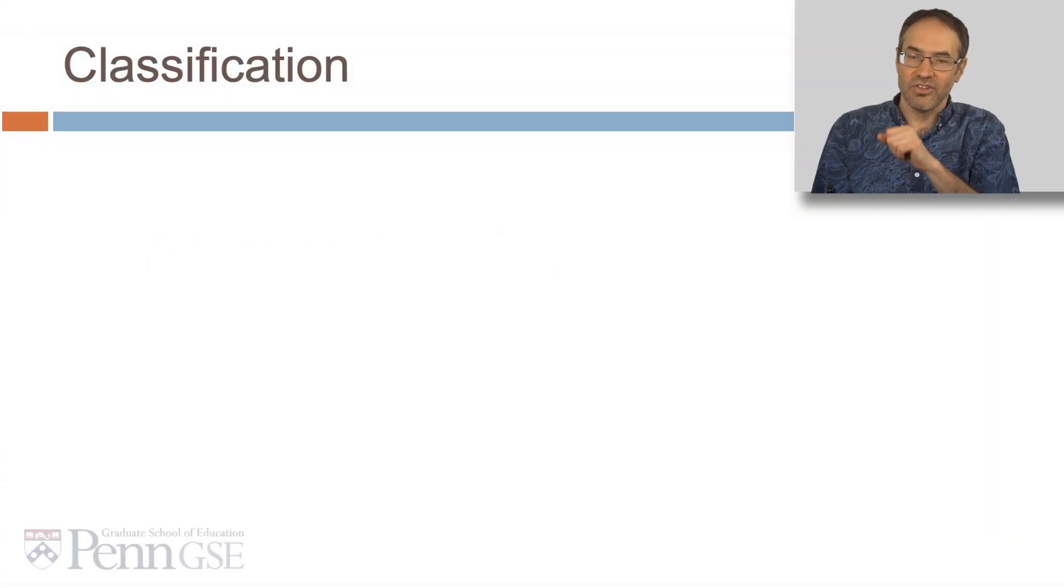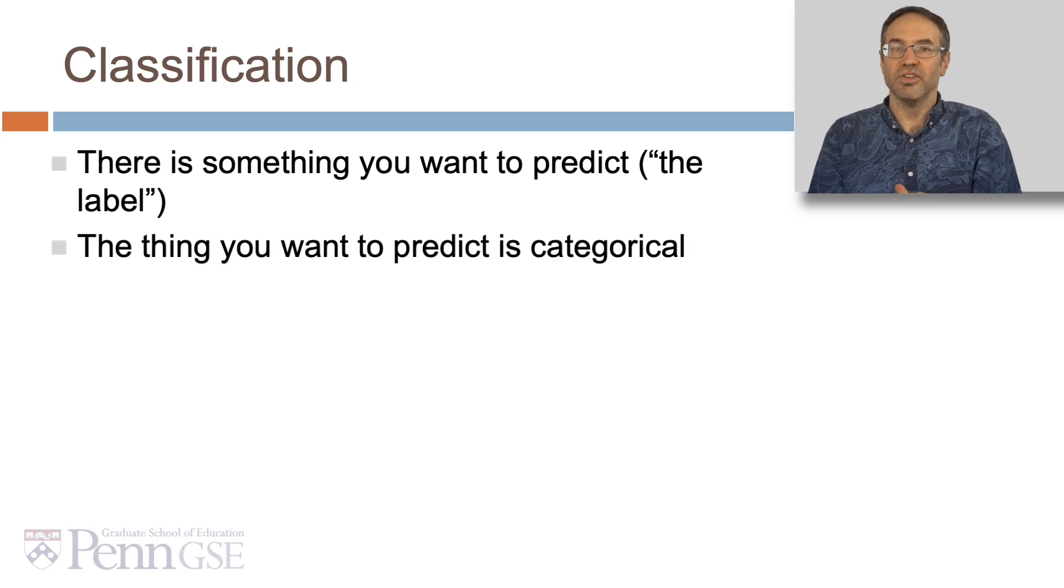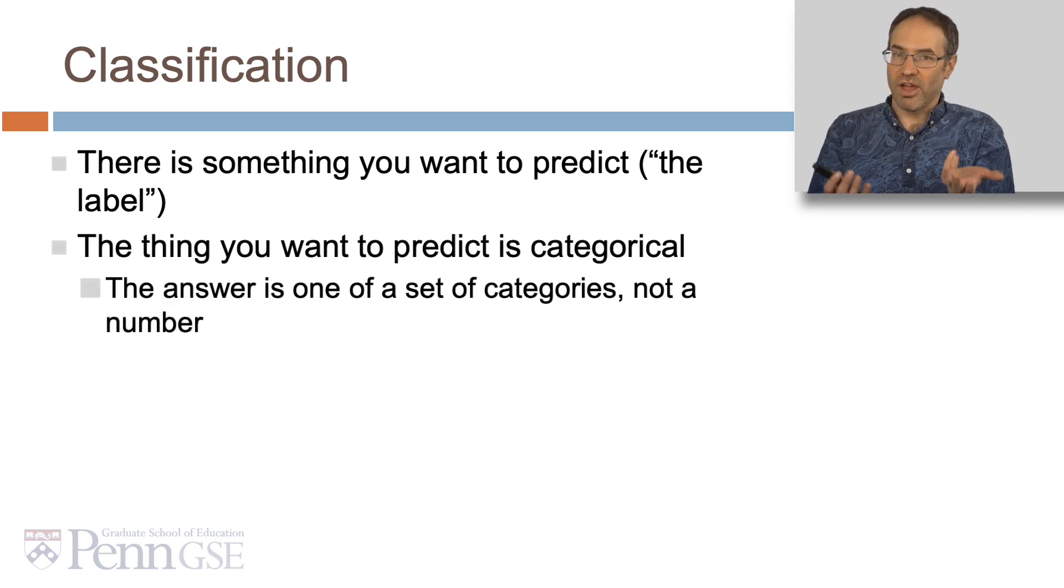You may remember, classification is when there's something you want to predict, the label. The thing you want to predict is categorical—it's one of a set of categories, not a number.